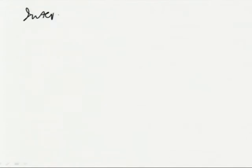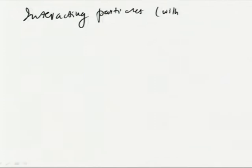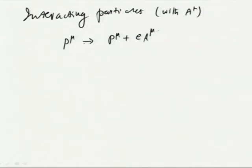We are discussing the Dirac equation. For interacting particles, the interaction with an electromagnetic field is represented by A_μ. This we had already discussed: we change P_μ to P_μ plus the charge of the particle times A_μ, where the charge of the particle is minus e for an electron-like particle. This gives γ^μ P_μ minus m applied to ψ for the free particle.